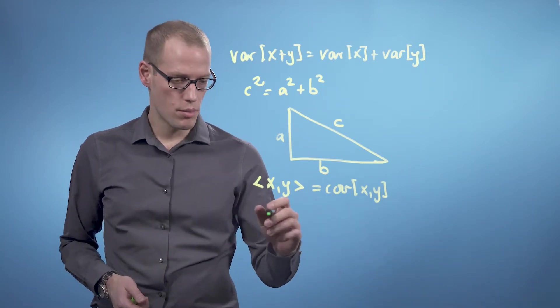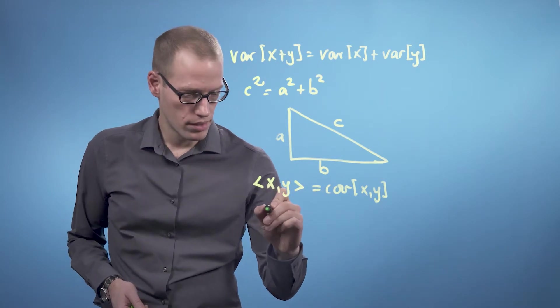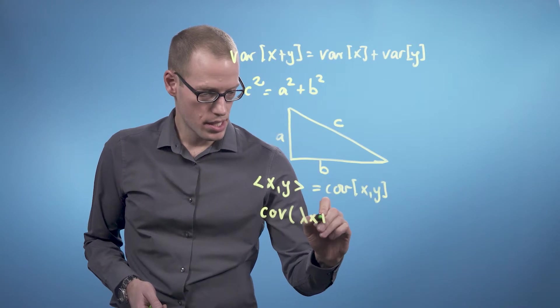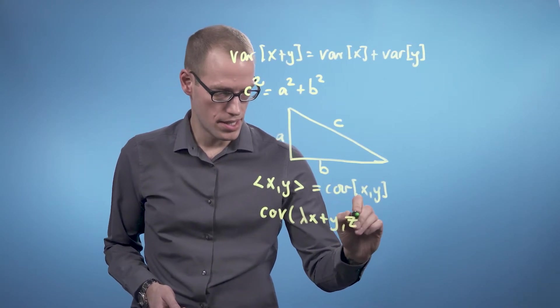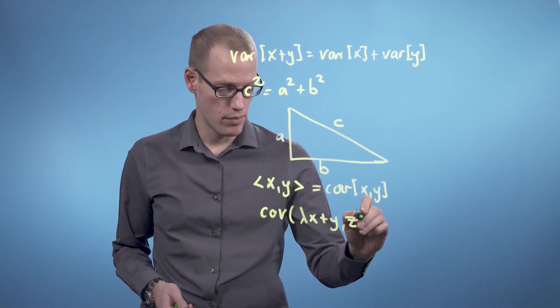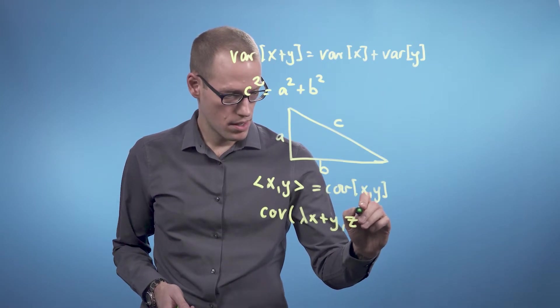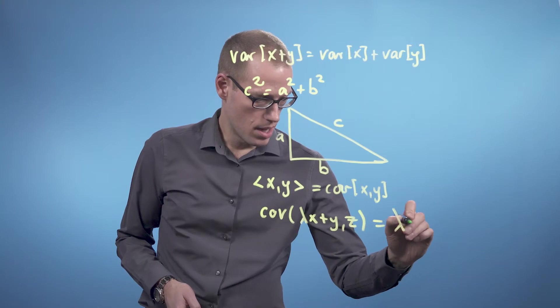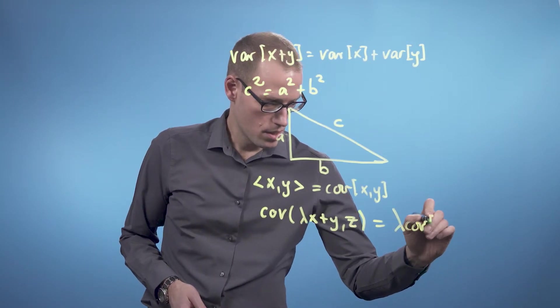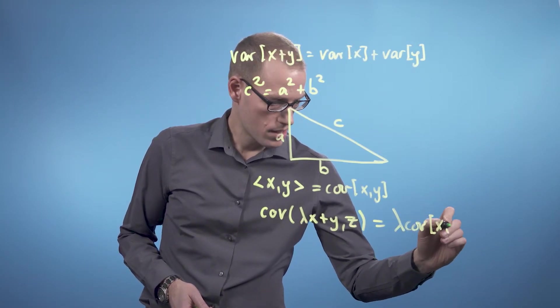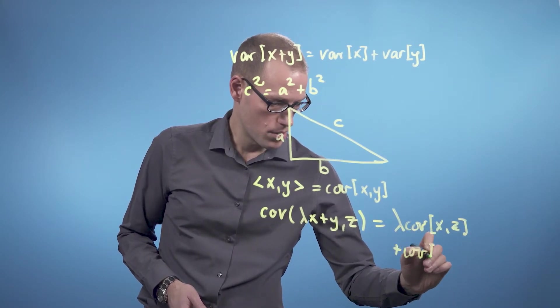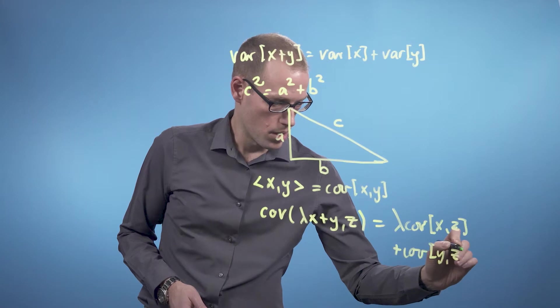So linearity would mean that the covariance of λx + y and z, where x, y, and z are random variables and λ is a real number, is λ times the covariance between x and z plus the covariance between y and z.